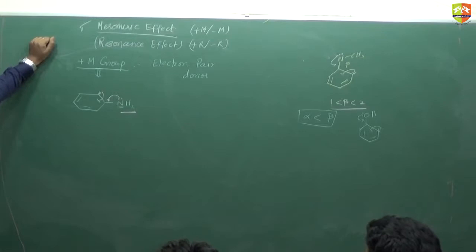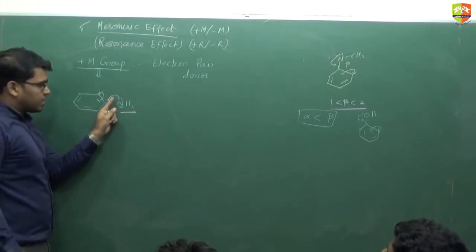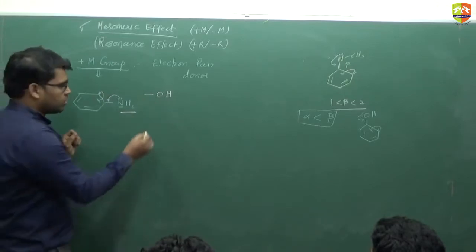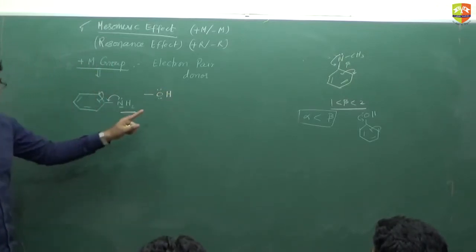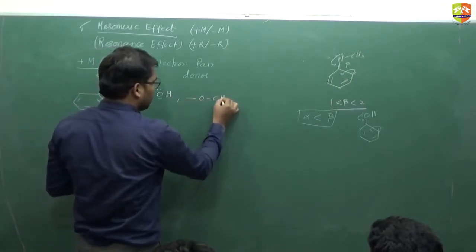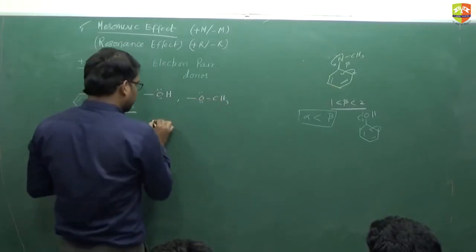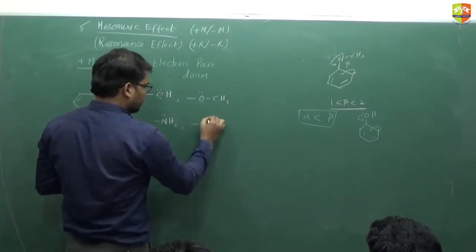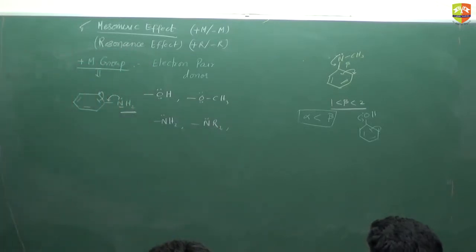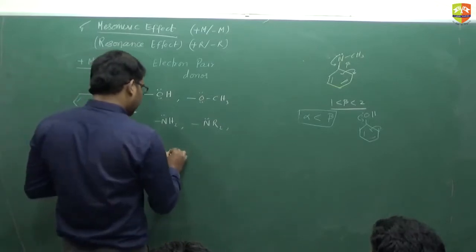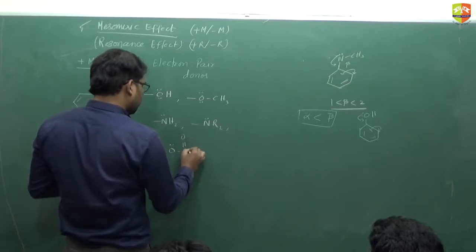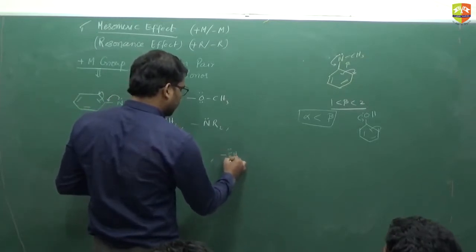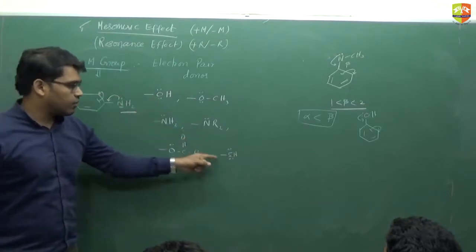The condition is: the first atom must have at least one lone pair. Examples of plus M groups: –OH (oxygen has two lone pairs, so it can release electrons), –OCH3, –NH2 (plus M effect), –NR2 (R is alkyl group), and –SH (sulfur also has lone pairs so it shows plus M effect).